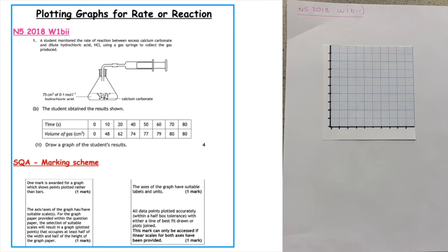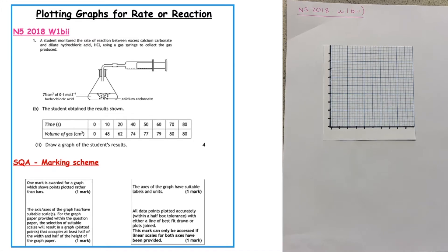In today's lesson we are going to be looking at drawing graphs to show the rate of a reaction. This first past paper question is from the National 5 2018 written 1b part 2, and what we have is results from a student's experiment. We are asked to draw a graph of those results.